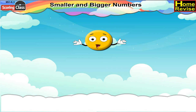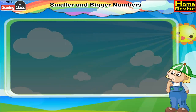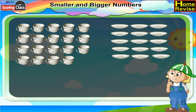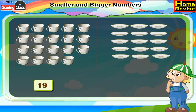Smaller and Bigger Numbers. Kids, can you see some cups and saucers? These are 19 cups, and these are 15 saucers.